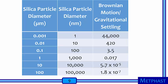Thus, Brownian motion dominates for particles 1, 10, and 100 nanometers in diameter, whereas gravitational settling dominates for particles 1, 10, and 100 micrometers in diameter.